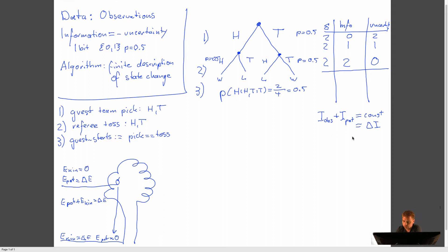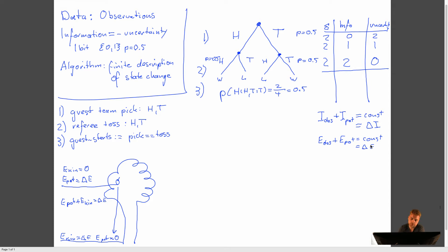This absolutely correlates with the fact that observed energy — I call this observed energy because you can convert kinetic energy to electrical energy and so on — plus the potential energy is also a constant, or in our case delta E. So that's an interesting coincidence. We could ask ourselves, is there any better connection than just this coincidence? And in fact, there is.